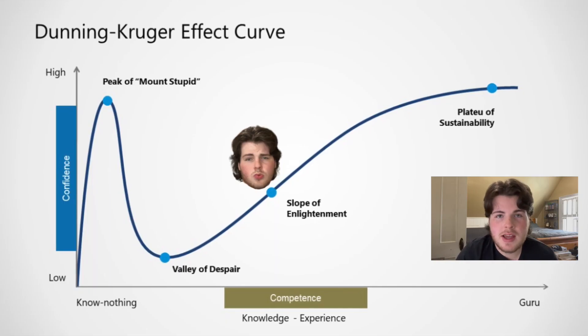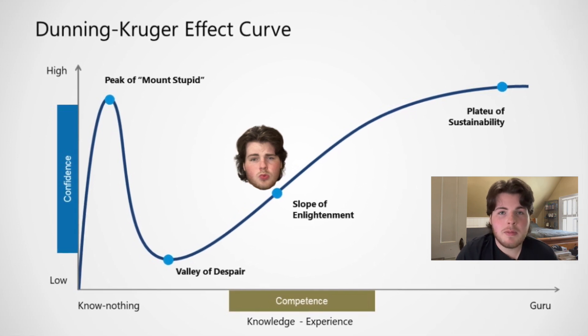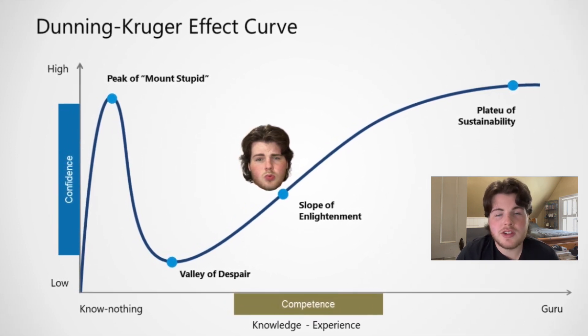Once I lost money during the GameStop AMC incident, I was quickly at the bottom of the valley of despair because I realized I knew nothing about investing. It's been a couple years and I've learned a lot, so I can say I'm in the slope of enlightenment. Overconfidence bias causes investors to make bad decisions because they downplay risk, and it might cause someone to not diversify their portfolio enough, leaving a lot more risk for intense fluctuation and bigger losses.